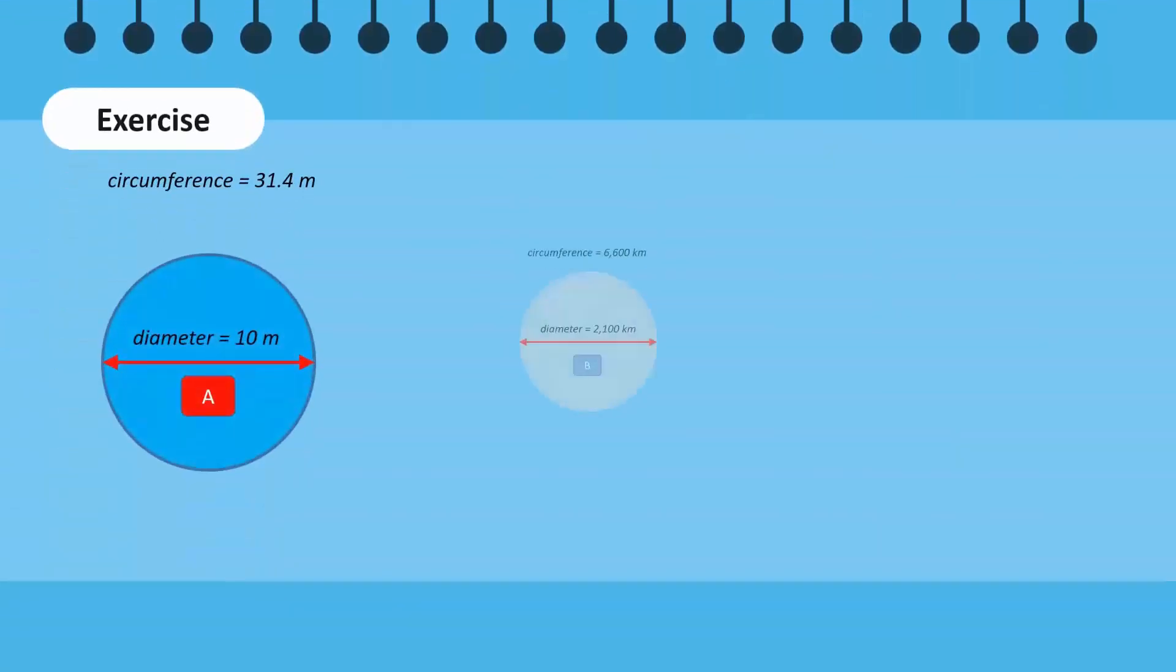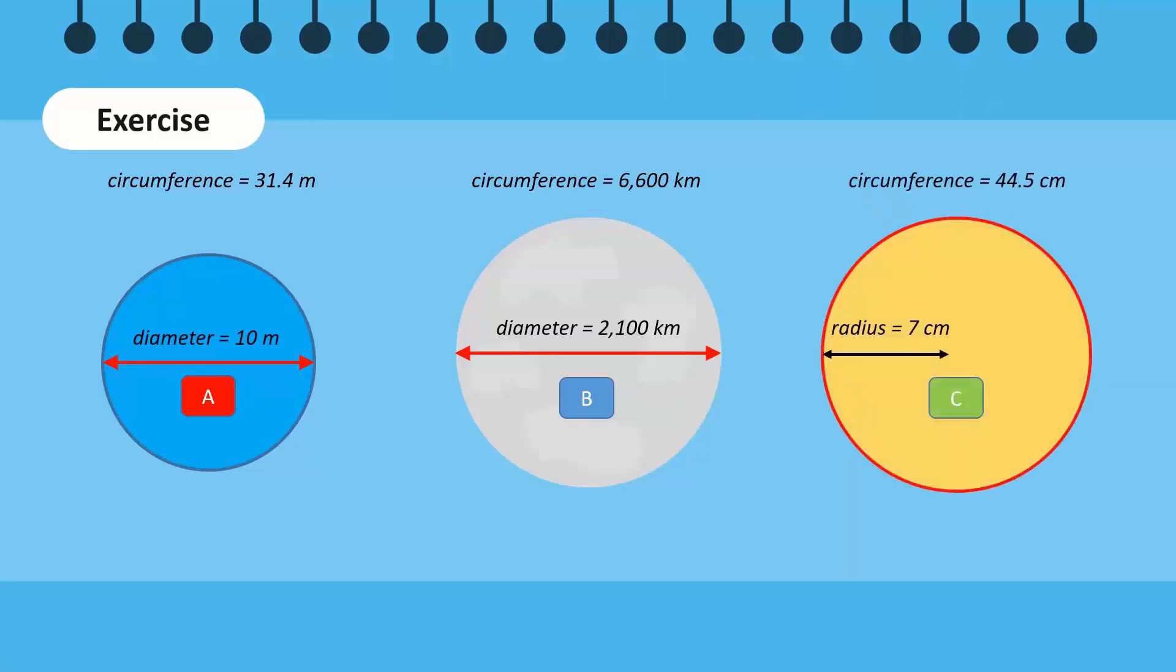Given the following circles, can you find out what values we get when we divide their circumferences with their diameters? First, we write down the circumference of each circle, then we identify the diameter of each circle. Note that in circle C, the radius is given. To get the diameter, we use the formula d is equal to 2r.